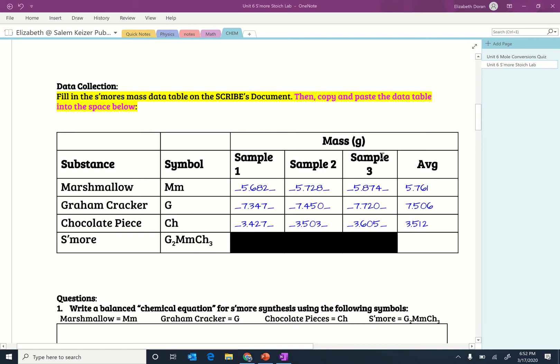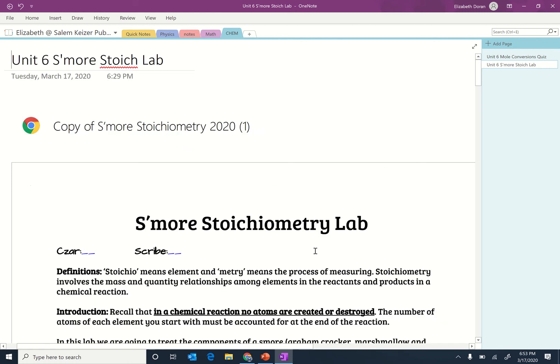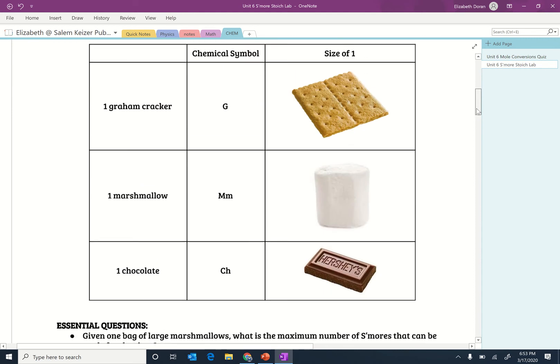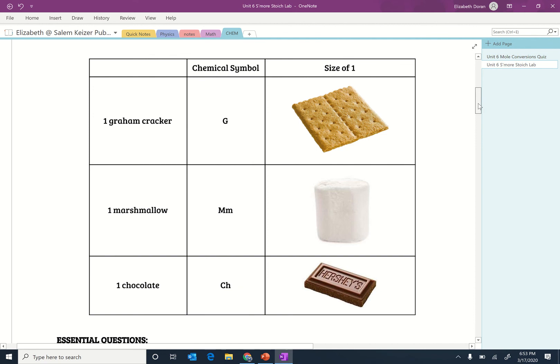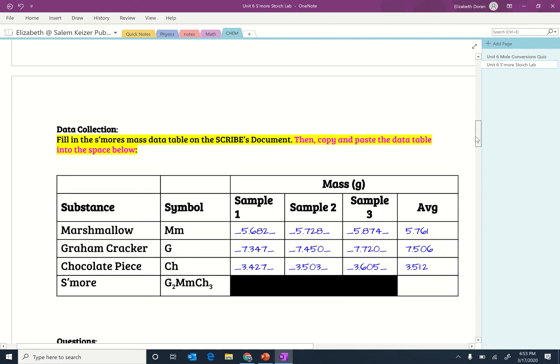If you recall we said a graham cracker was going to be just like one of the half sheets. So if you go up to the top of the lab and take a peek, up here the one graham cracker is the half sheet of graham cracker. So you should have taken the mass of three of those, averaged it to find the average mass of graham cracker.